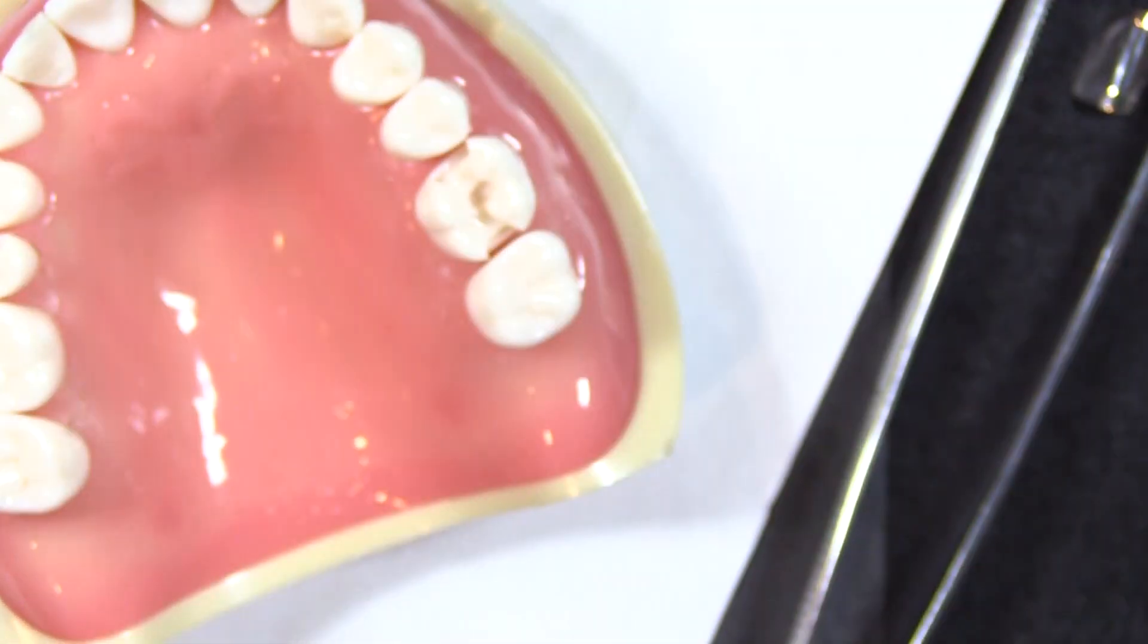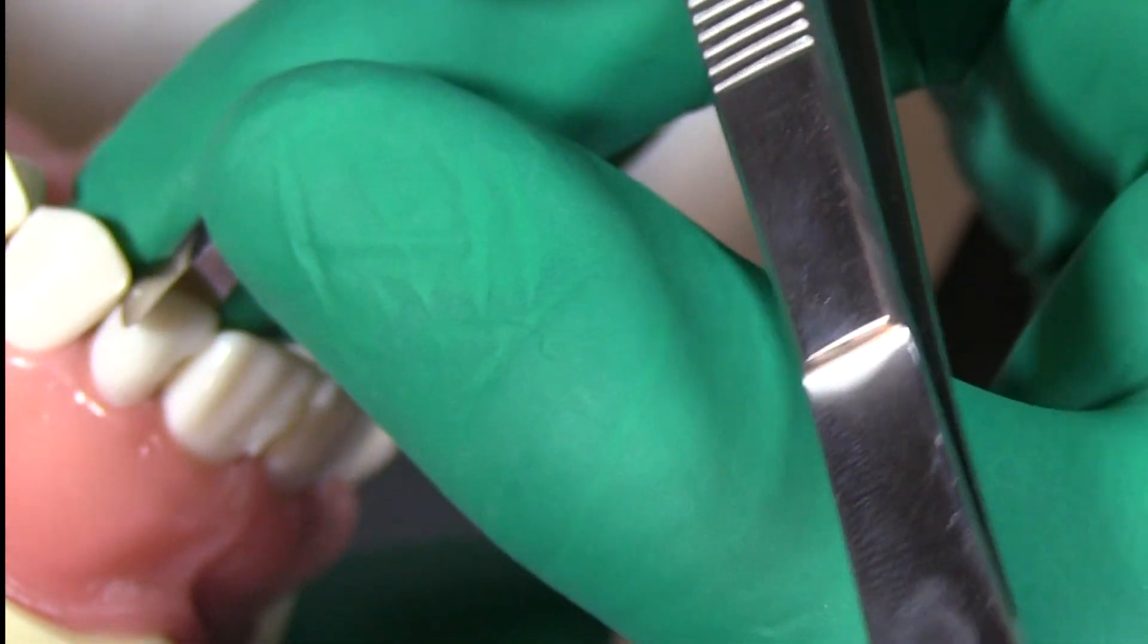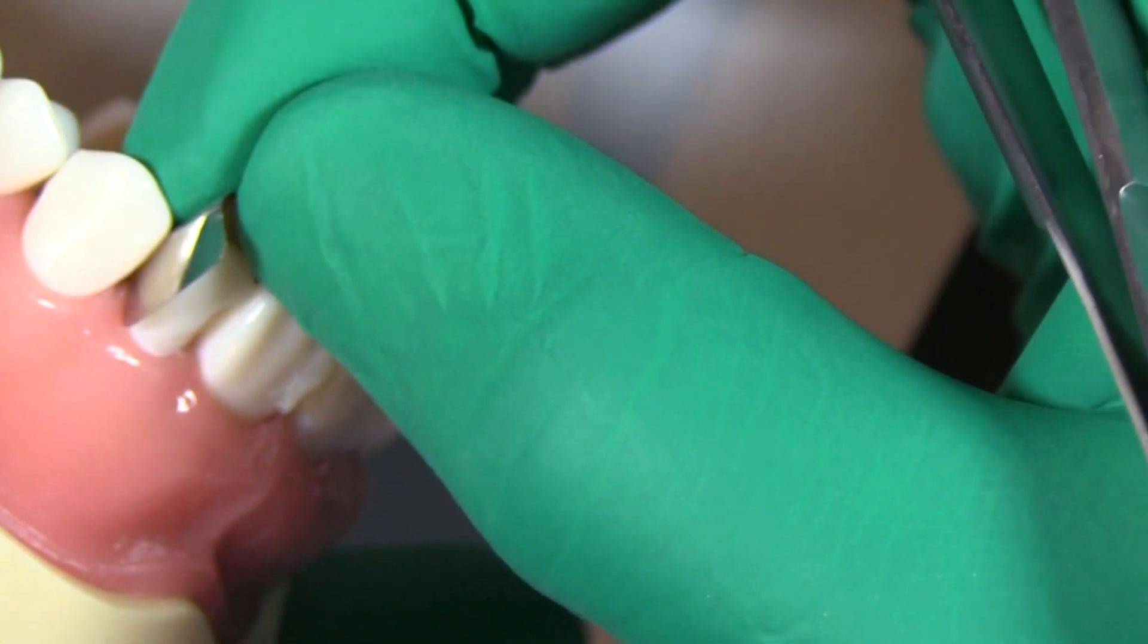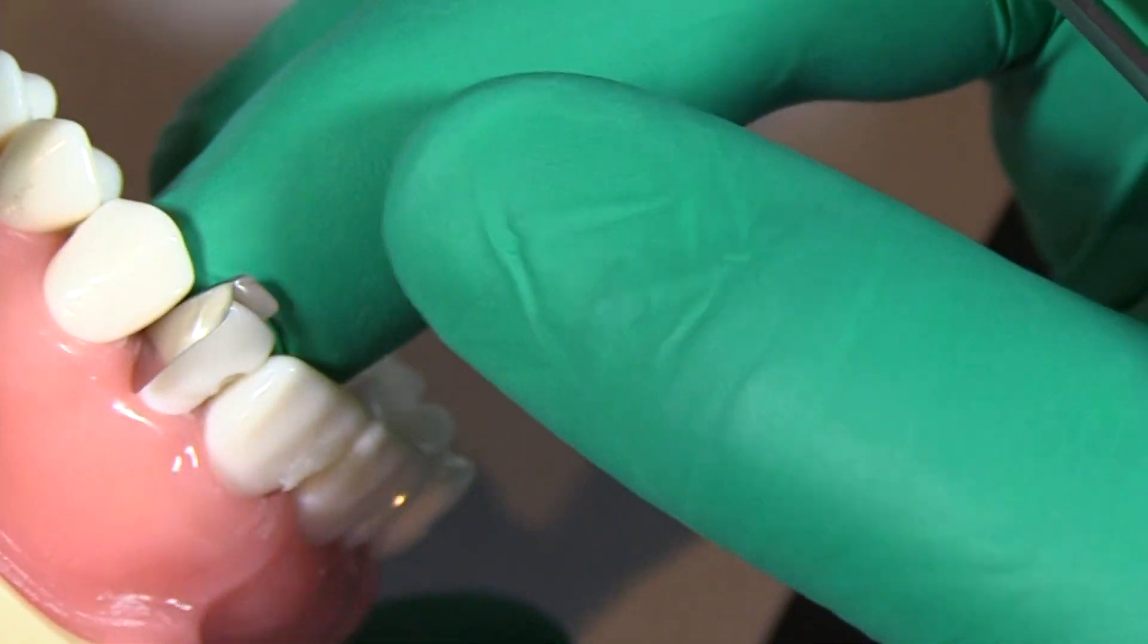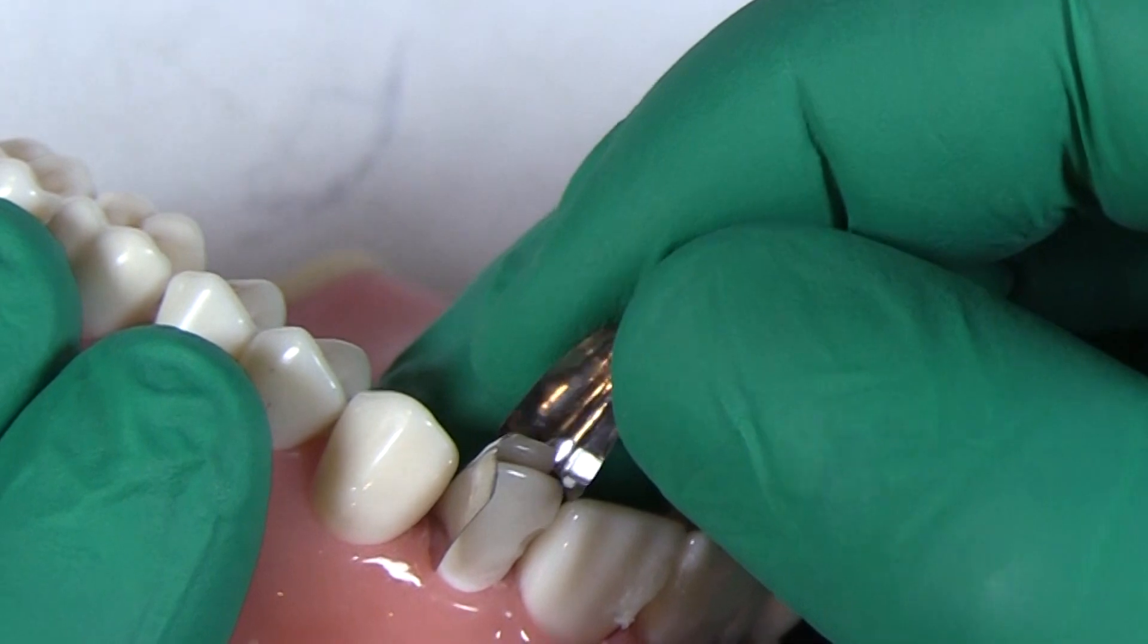And what we're going to do is we're going to grab two more of these fusion matrix bands. In this situation it's a smaller tooth, I could probably go with a smaller matrix band but you don't necessarily need to, and I'm going to put two in at the same time.